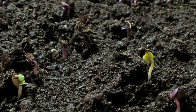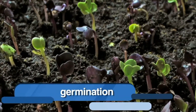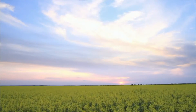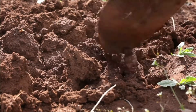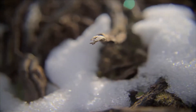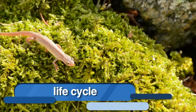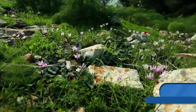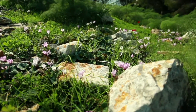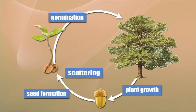When a plant embryo begins to grow, we say that the plant is germinating. Germination is the beginning of the growth of a plant embryo. Germination depends upon the right amount of water, the right temperature, and enough oxygen. Many seeds germinate in the spring because the temperature of the ground and air are warmer. Plants, just like other living things, have a life cycle. Some plant life cycles can be completed in one year; some plants take longer. But no matter how long a plant's life cycle, all seed plants go through the following cycle: germination, plant growth, seed formation, and scattering.